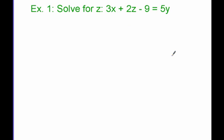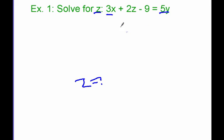So let's look at example 1. Solve for z in the equation 3x plus 2z minus 9 equals 5y. We want to first identify that we are solving for z. At the end of this process, I want to have z equals something. These other terms with variables in them — we're just going to treat them like constants. We're not going to try and figure out what x or y equals; we'll just leave them in the equation.